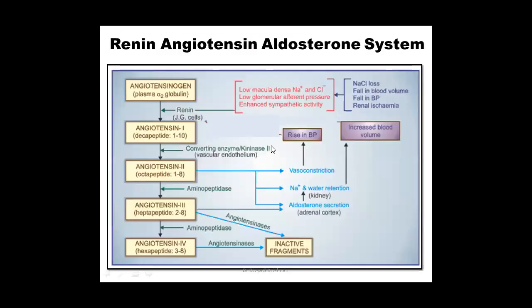Here is the flowchart of the renin-angiotensin-aldosterone system. I am showing the stimulus — the starting point of this pathway — and then the complete pathway. I will describe it step by step and then we will come back to this diagram again.